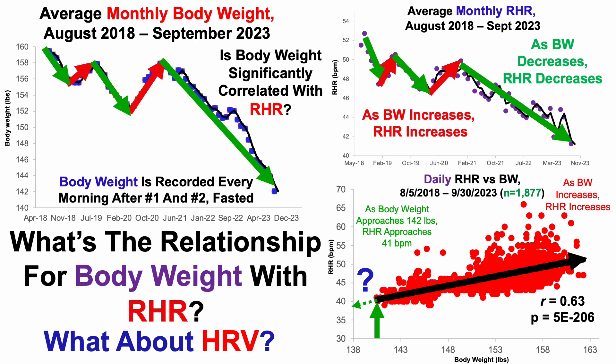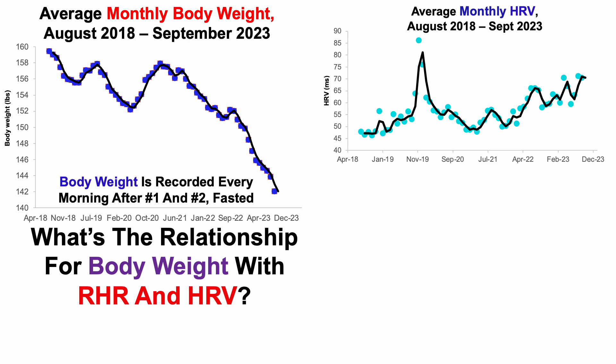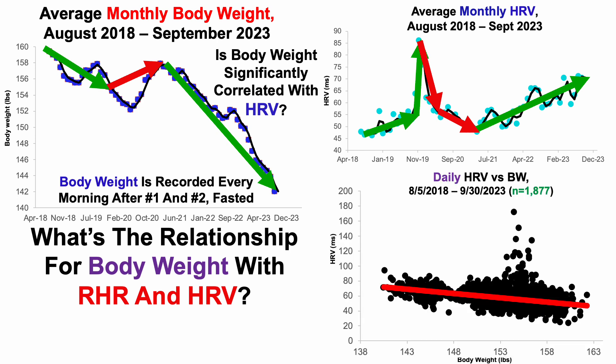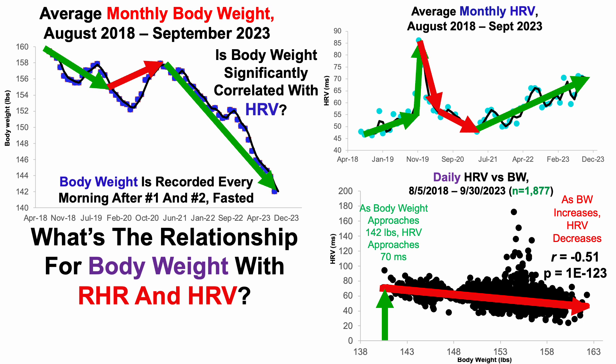So what's the relationship for body weight with heart rate variability? Starting with the body weight plot, let's take a look at the overall gross morphology of the average monthly heart rate variability. Although there doesn't seem to be an obvious overlap with the body weight plot, there are some trends: during periods where body weight has been reduced, heart rate variability has increased, and during a period where body weight increased, heart rate variability decreased. Looking at the direct correlation with almost 1,900 days of data, we can see a significant negative correlation between daily heart rate variability and body weight. As my body weight has increased, that's significantly correlated with a lower heart rate variability. Conversely, as my body weight has approached 142 pounds, heart rate variability has approached more youthful values close to 70 milliseconds. Just as proposed for resting heart rate, if I'm able to get leaner, will I continue to see a further increased heart rate variability? Stay tuned for that in future videos.